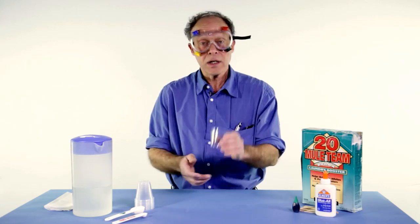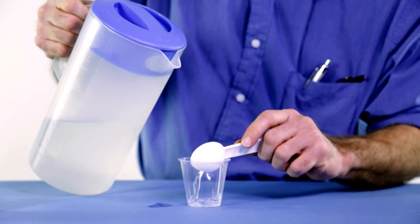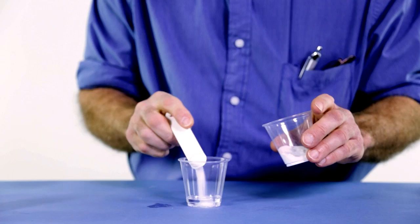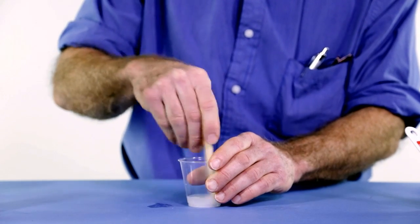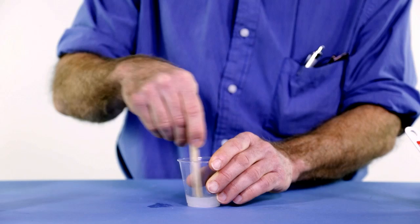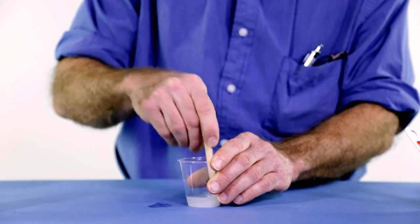First thing you need is just a tablespoon of water, a quarter teaspoon of borax. I'm going to stir that with a popsicle stick until you get as much to dissolve as you can get. So that's your borax solution.